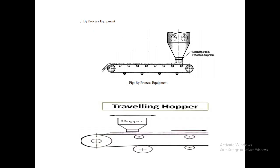The third method is by process equipment. In this method, the discharge from the process equipment — for example, a crusher, mixer, or screen — is taken as the feed for the conveyor. We can use different equipment such as a hopper, crusher, or mixer as the process equipment. The discharge from such process equipment feeds the material to the flat belt conveyor.